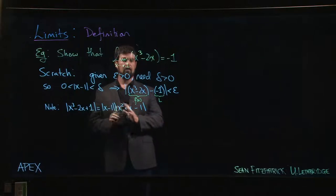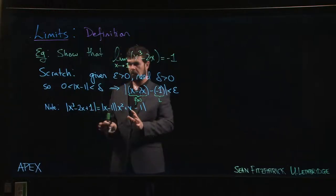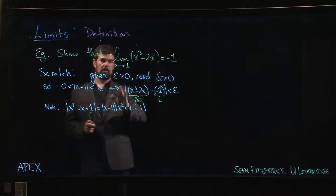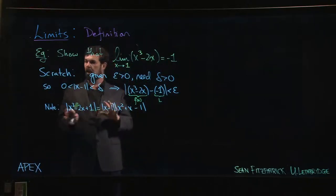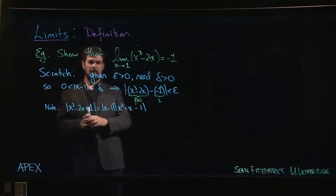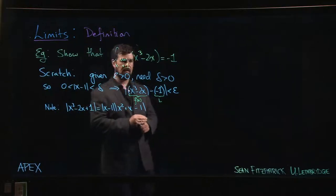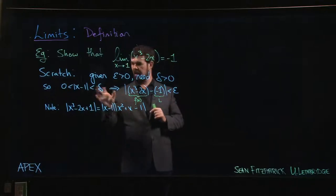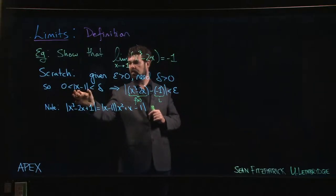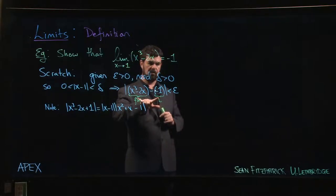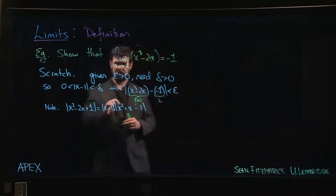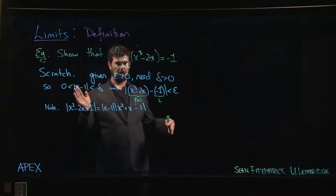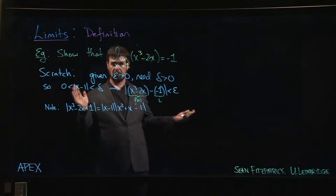This is the last example in the section in Apex Calculus on the formal definition of the limit. It's a little bit more complicated — we've got a cubic polynomial and we want to show that the limit as x approaches one of this polynomial is minus one. The definition says that for all epsilon greater than zero there has to exist a delta so that if the difference is less than delta in absolute value, then this difference will be less than epsilon in absolute value. The universal quantifier on epsilon means this argument has to be general — it has to work no matter what epsilon is.